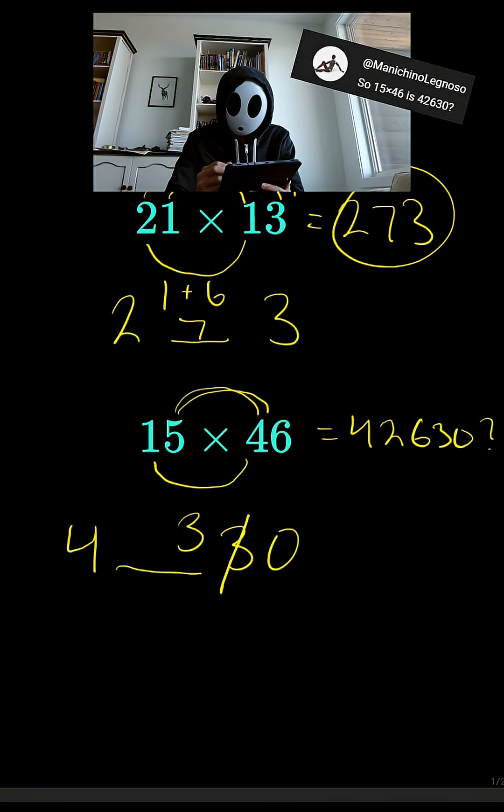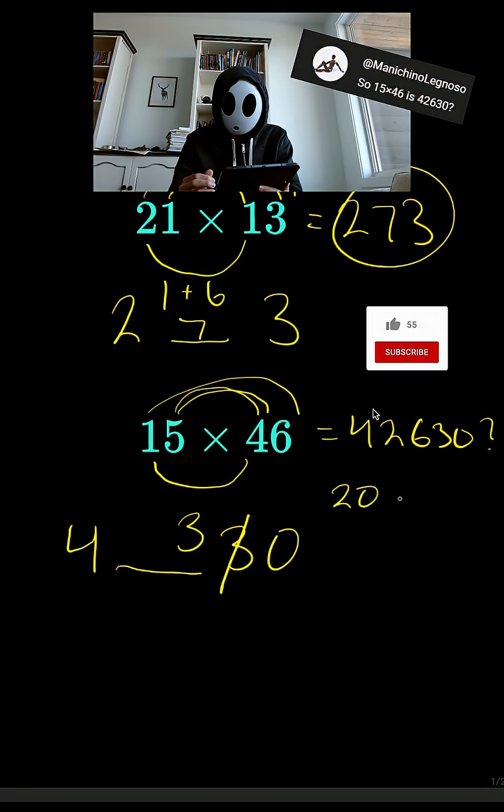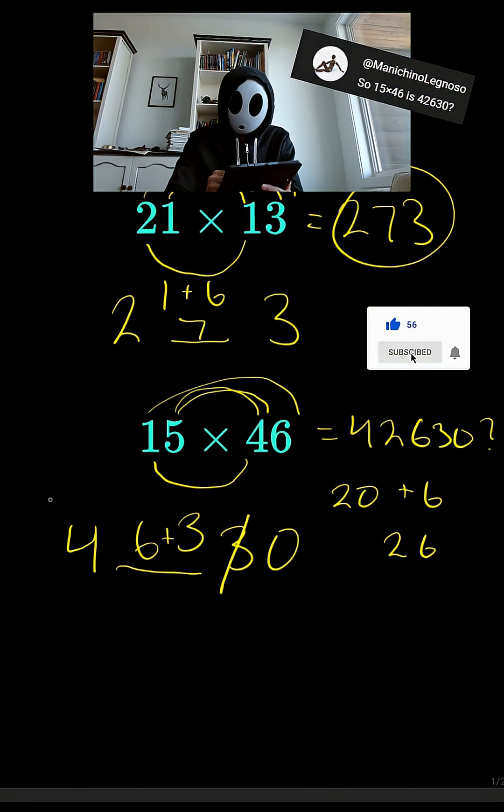So after we do that, we multiply the insides by the outsides, 5 times 4 is 20, and 1 times 6 is 6. So we add that, that's 26, and then we put the 6 in here, and we add it to the 3, and we carry the 2 over. So that equals 690.